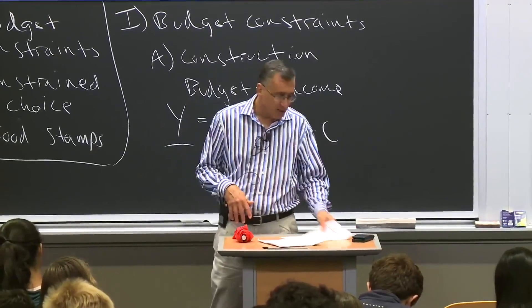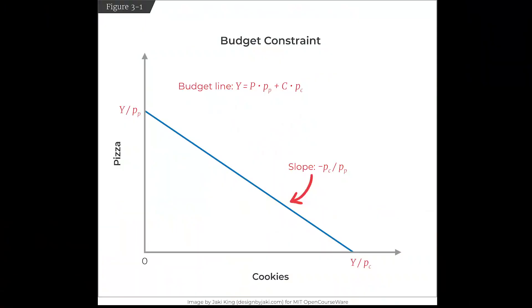I find this easier to see graphically. Figure 3.1 shows a budget constraint. The x-axis is your income divided by the price of cookies — if you devote all your income to cookies, you get Y over P_c cookies. If your income is $100 and cookies are $10, you can only have 10. The y-intercept is income divided by the price of pizza. The slope of the budget constraint is the negative price ratio: negative P_c over P_p.